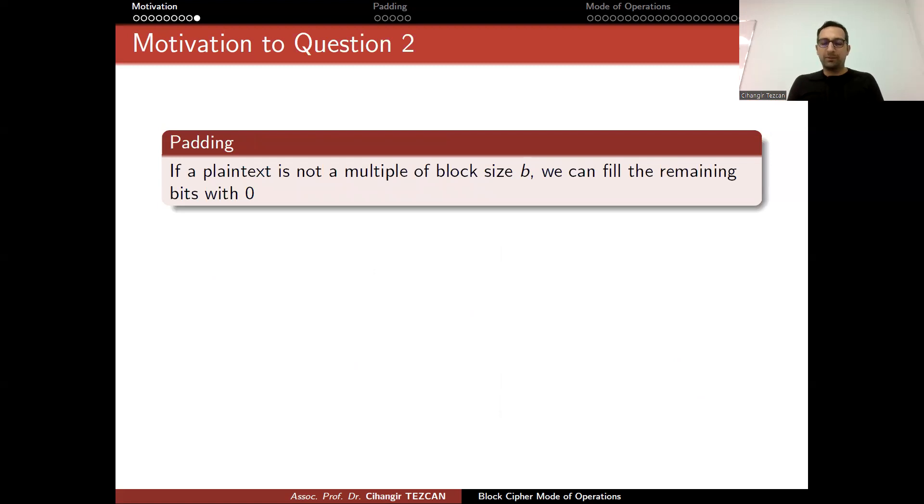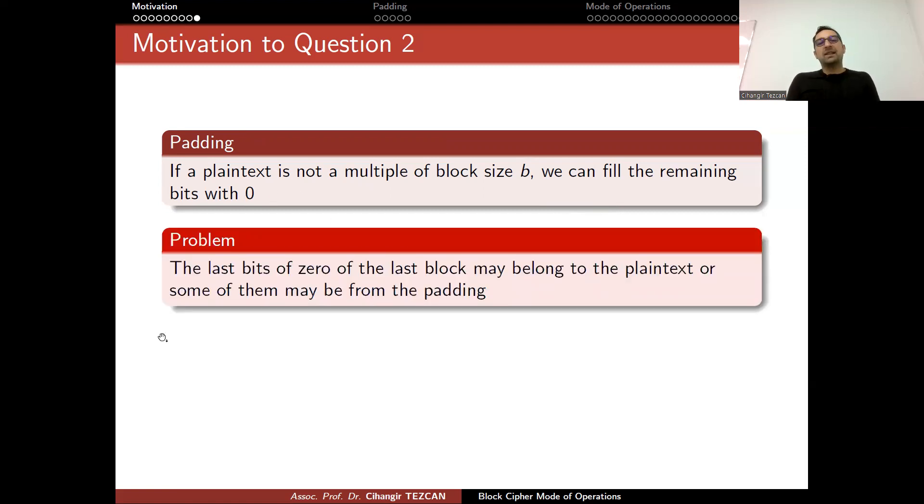Finally, let's talk about the motivation for our second question. We asked what happens if the plaintext is not a multiple of the block size b. For instance, if your blocks are 64 bits, consider encrypting 37 bits or 102 bits and so on. So the first thing that comes to mind is to fill the remaining bits with zeros. This is the easiest thing you can do.